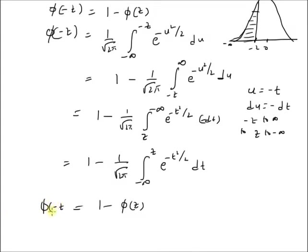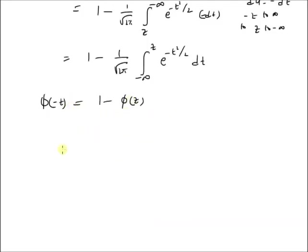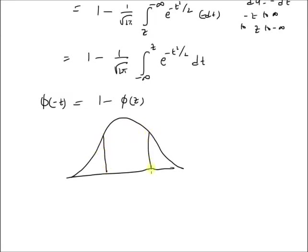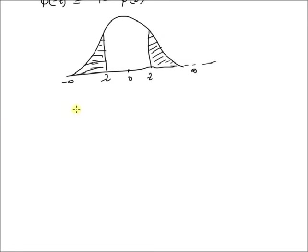Therefore, Phi(−z), that is the CDF at minus z, is equal to 1 minus the CDF at z. Basically, what we are proving is that the area under the standard normal PDF has symmetric properties — that is, the area between minus infinity and minus z is the same as the area between z and plus infinity. This area equals that area, especially when the mean is 0, meaning this PDF is symmetrical with respect to the location of the mean.